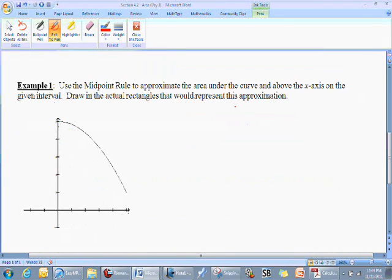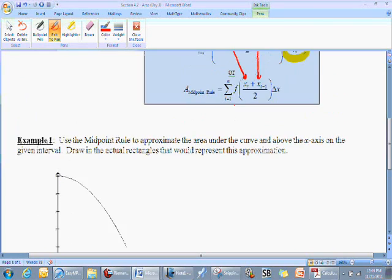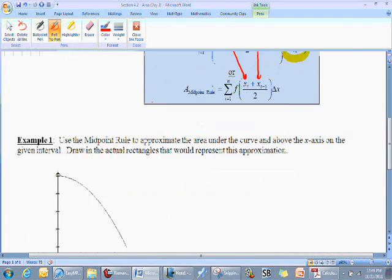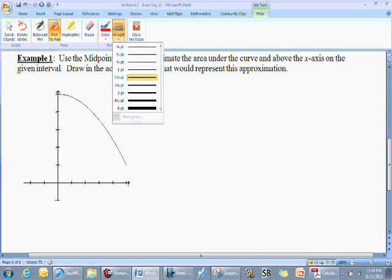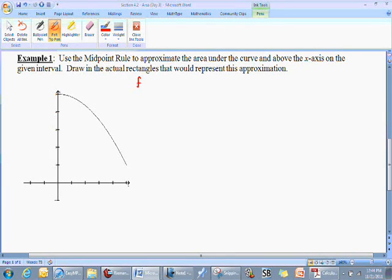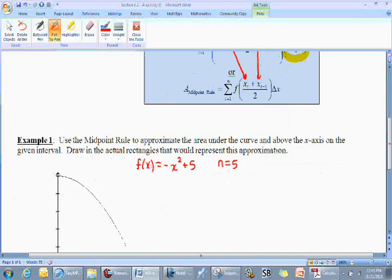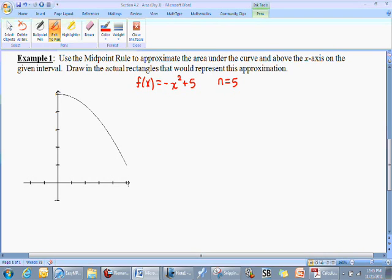So that being said, we can move down to example one. We are using the graph of negative x squared plus 5. Perhaps I didn't make that real clear, but you can see that indeed is the function. I'm going to rewrite that: f(x) equals negative x squared plus 5. We've already stated that we have five rectangles, so n will be five. We also know that we're going to be utilizing the interval [0,2].